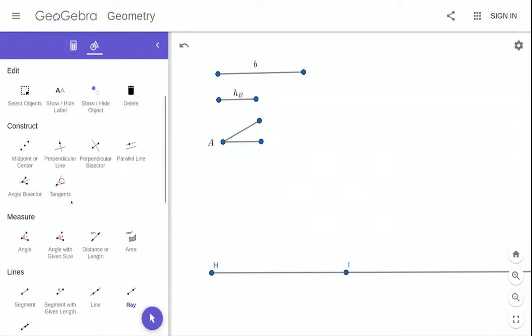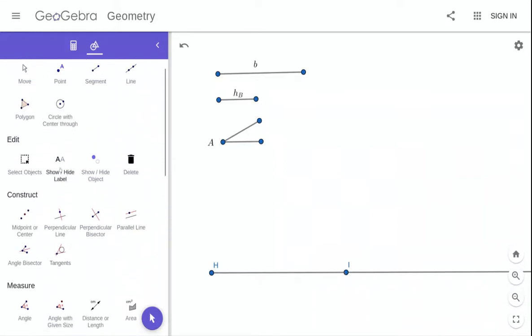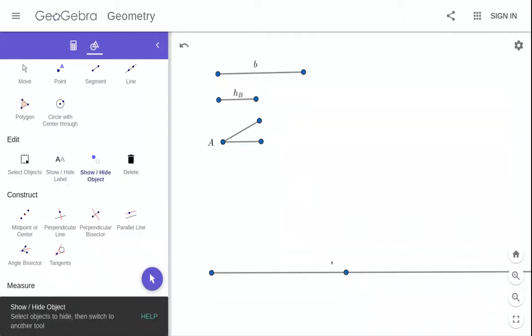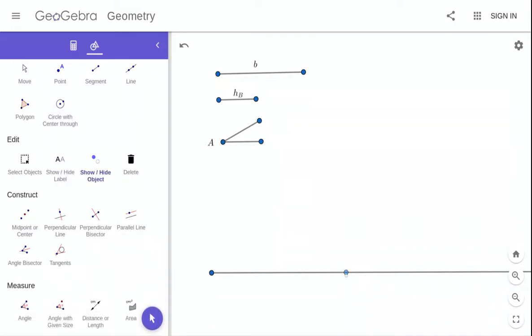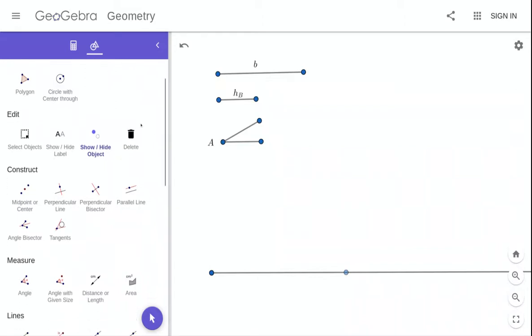Now with GeoGebra, you can go through, and if you choose this show hide label, you can hide these things. And in fact, I want to hide this point as well. So we know that that's not a vertex of our triangle necessarily.